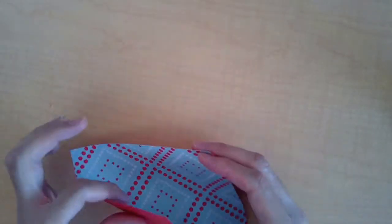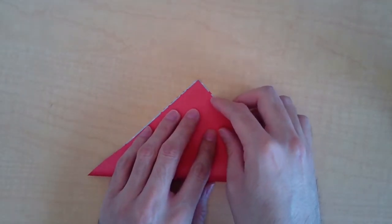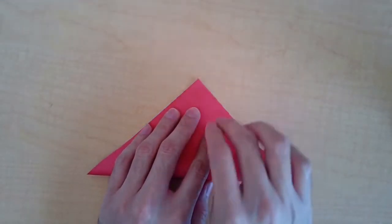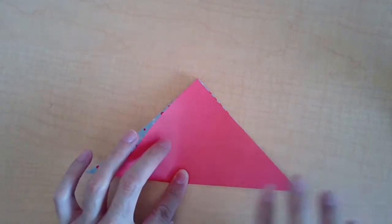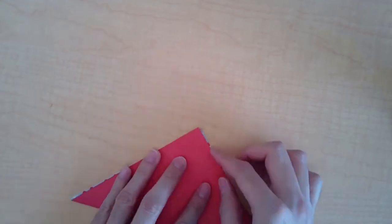Start off by folding the paper in half diagonally. You're going to want to line the edges so there's no overlap.